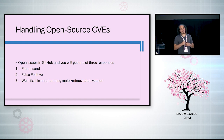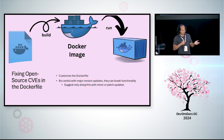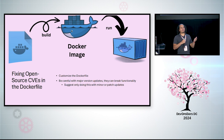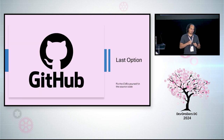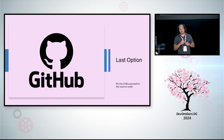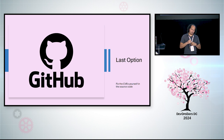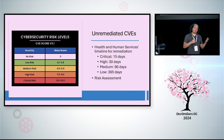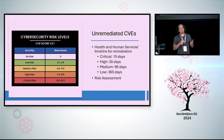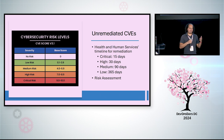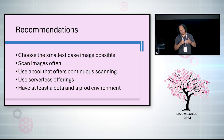You do have options. Number one is customizing your Dockerfile — you can switch package versions in there, but be cautious and only do this for minor or patch versions, as you can break functionality. The last option is you become an open source contributor and fix the CVEs yourself, but that's going to take away from your app development. So you may end up with unremediated CVEs. We provide our customer documentation of how we've mitigated these risks, and they can assess and either accept or decline that risk.